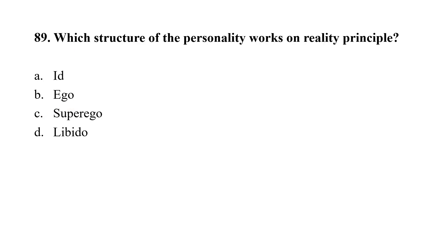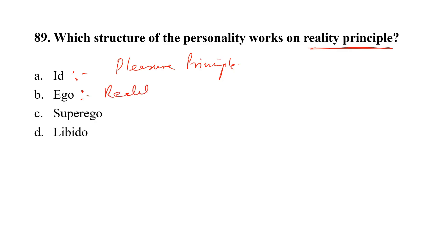Question number 89. Which structure of the personality works on the reality principle? Option A, Id; Option B, Ego; Option C, Super Ego; Option D, libido. Id works on the pleasure principle. Ego works on the reality principle. Super Ego works on the perfection principle. The correct option is B, Ego.